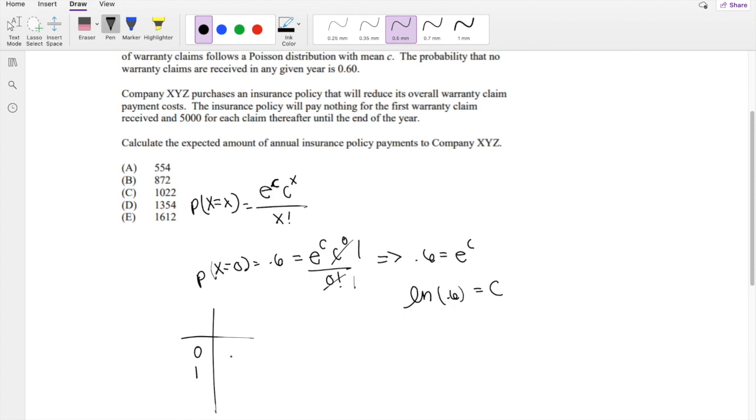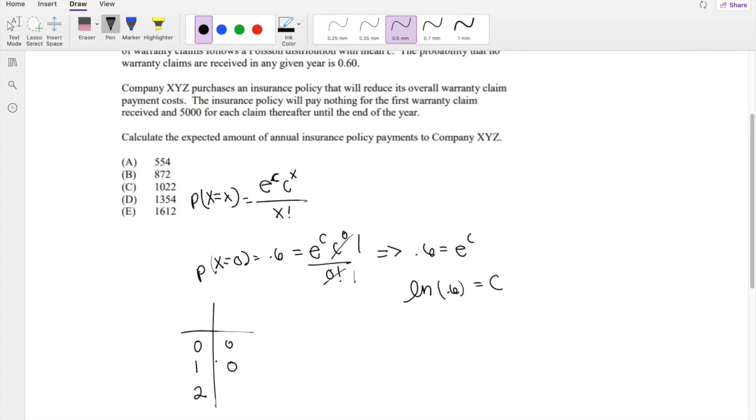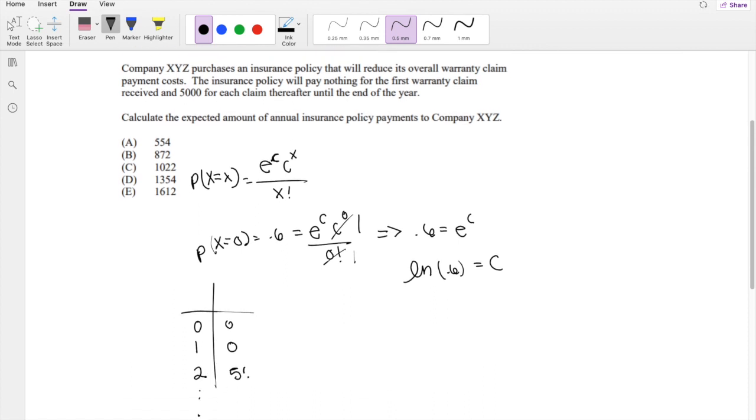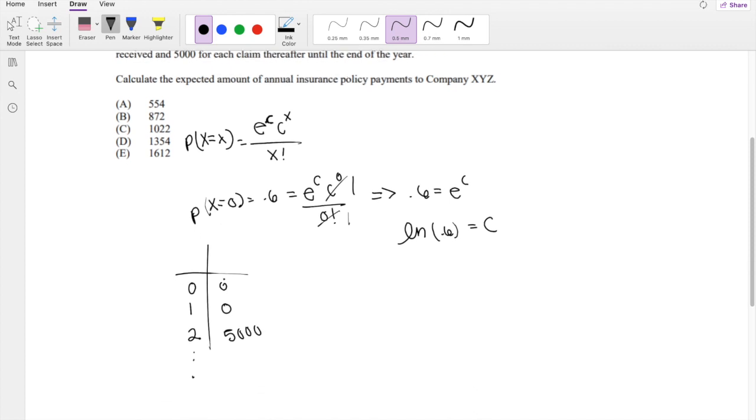The insurance pays nothing for the first warranty claim. So 0, obviously at 0 it's 0. At 1 the payout is 0. At 2 and on they will pay $5,000. If it's 3, for example, then that's basically 2 of these, right?